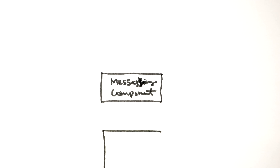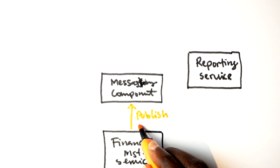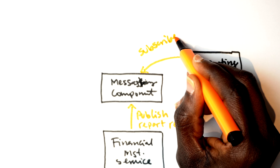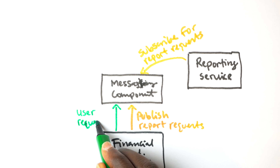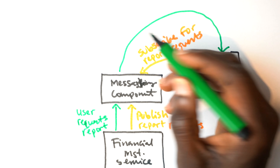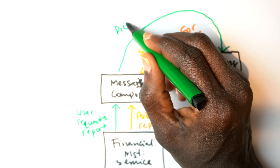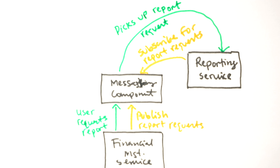What we can do is introduce a messaging component. This messaging component allows the financial management service to publish report generation data and tasks to it. On the other end, the report service registers and listens for report generation requests on this messaging component. Whenever someone clicks the button to generate a report, the financial service takes that data, sends it to the messaging component, and immediately tells the user their report is being generated and they'll receive an email with a download link.